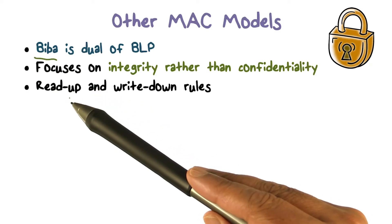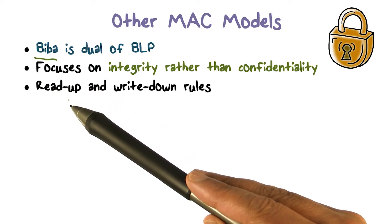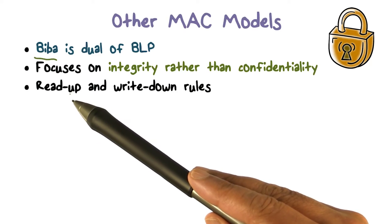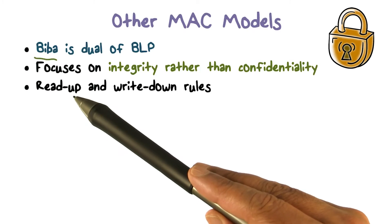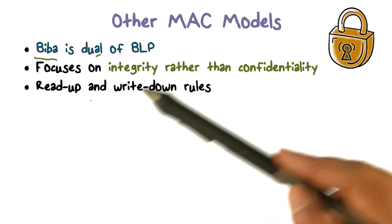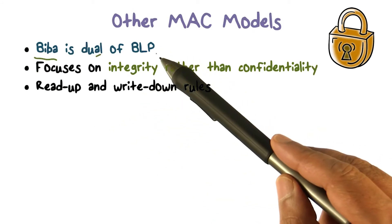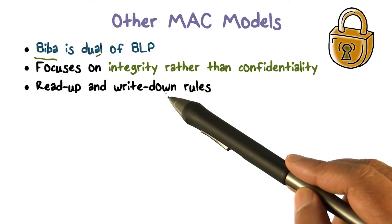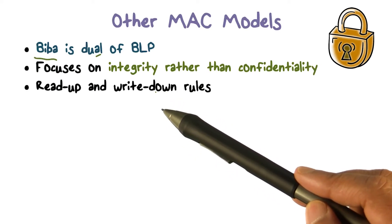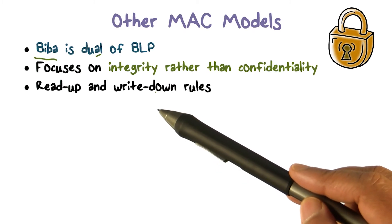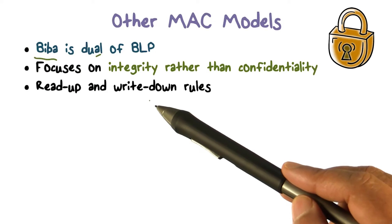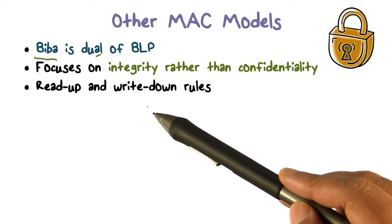When you're concerned about information quality or integrity, you want to read up, because anything below you is lower-integrity information — you don't want to read that. So reads in BLP go down; here in the Biba model you have read up. In BLP you have write up; in Biba you have write down. If you're at a certain level, the integrity of the information you can create and write is either at your level or it's less integrity than the level at which you are, so you're able to write down.